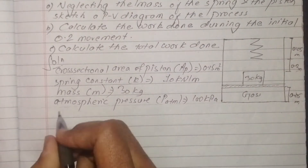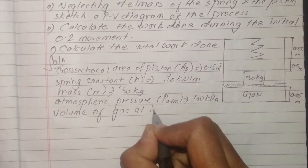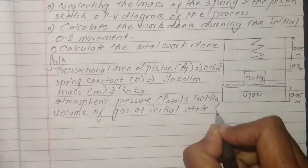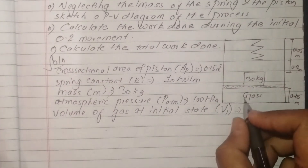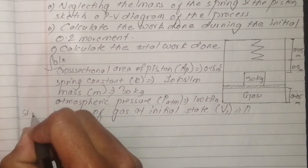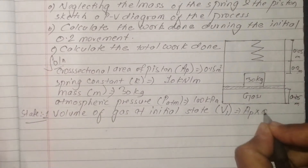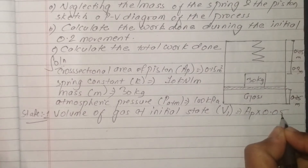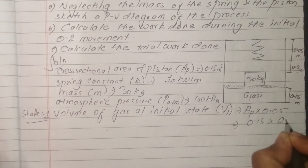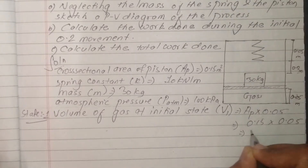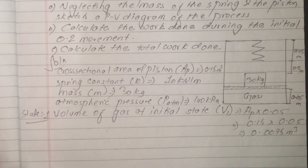Volume of gas at initial state: V1 = area of piston A_p multiplied by length. V1 = 0.15 meter square into 0.05 meter = 0.0075 meter cube.